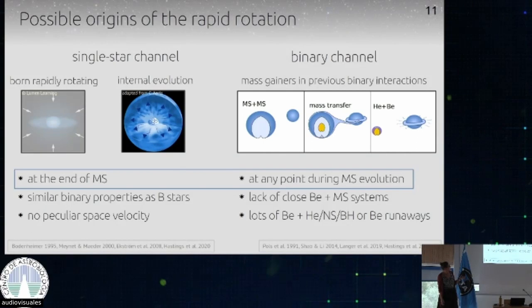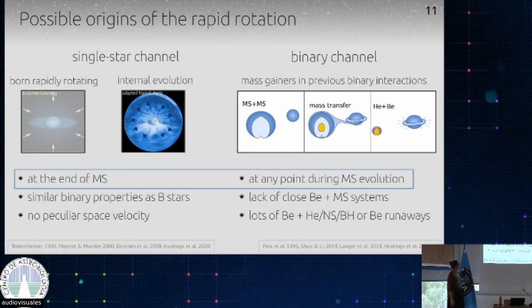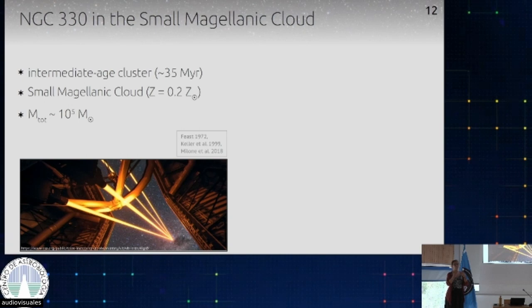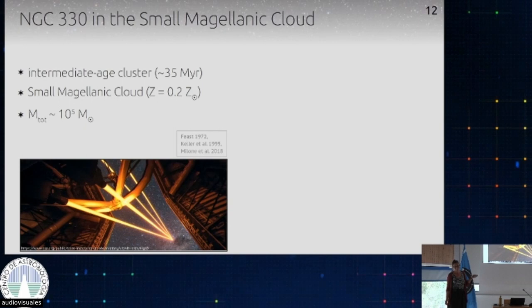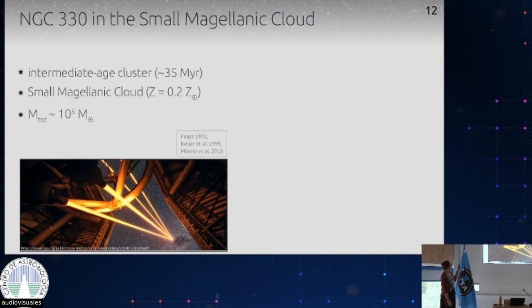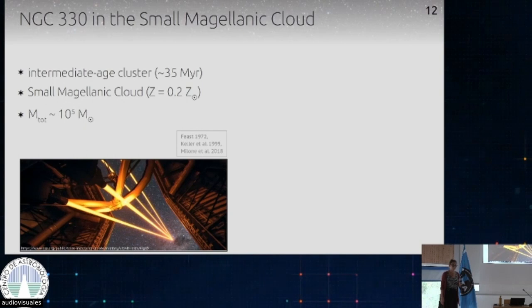So let's have a look. First, where do BE stars occur in the evolution? One of the good places to look is star clusters, because in a star cluster we can assume all stars are born at the same time and at the same distance — giving us a nice environment where we have a starting point and can compare the evolutionary stage of different stars. I'm just showing one cluster: NGC 330 in the Small Magellanic Cloud, around 35 million years old — an age where BE stars have not all evolved off the main sequence.